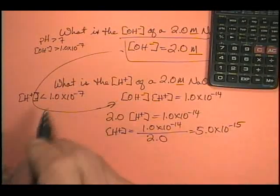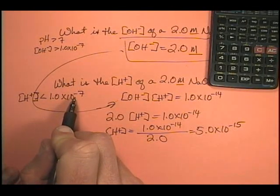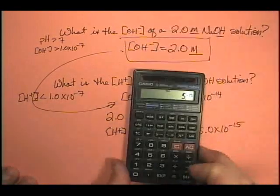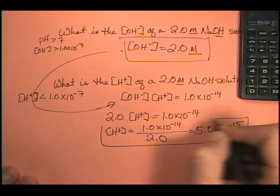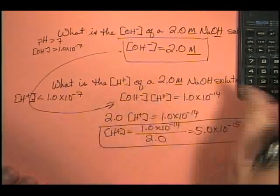10 to the minus 15, that's smaller than 10 to the minus 7. So, this is a reasonable answer since this is a basic solution.